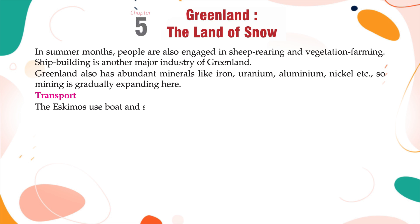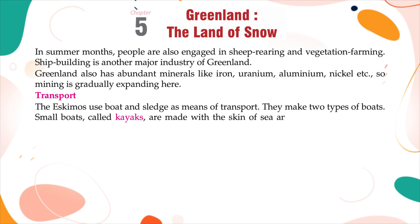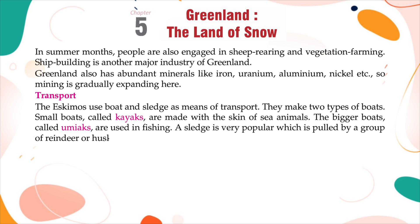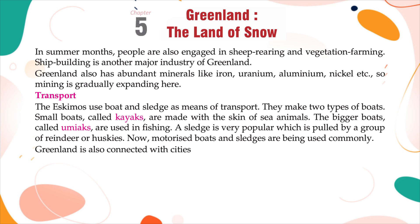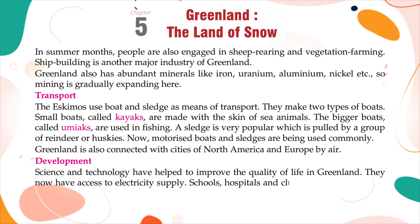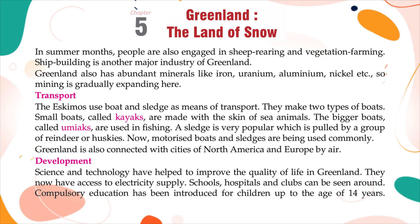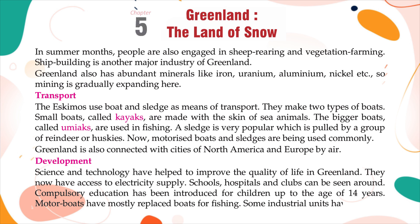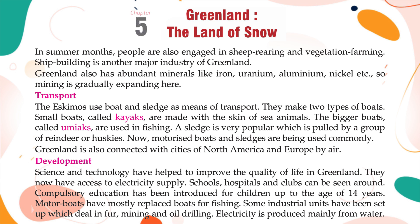Transport: The Eskimos use boats and sledges as means of transport. They make two types of boats: small boats called kayaks, made with the skin of sea animals, and bigger boats called umiaks, used in fishing. A sledge pulled by reindeer or huskies is very popular, though motorized boats and sledges are now commonly used. Greenland is also connected with cities of North America and Europe by air. Science and technology have improved quality of life — there is now access to electricity, schools, hospitals, and clubs. Compulsory education has been introduced for children up to age 14. Some industrial units deal in fur, mining, and oil drilling, and electricity is produced mainly from water.